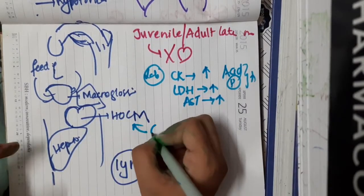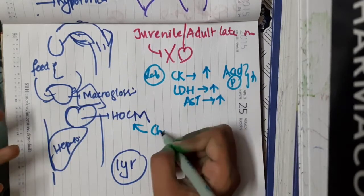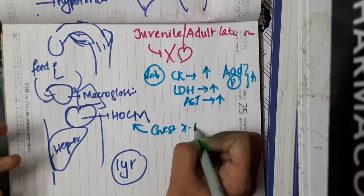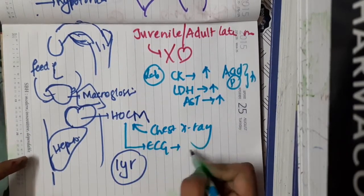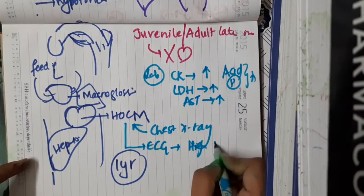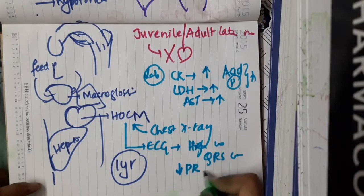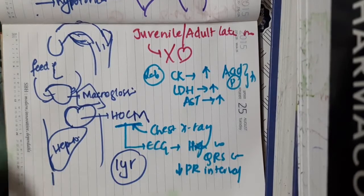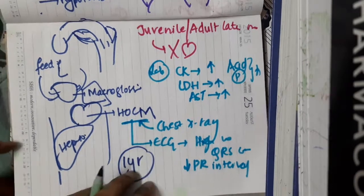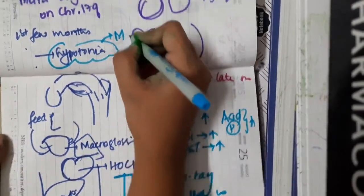Hypertrophic obstructive cardiomegaly — maximum cardiomegaly — can be seen on chest X-ray. Because of this cardiomegaly, if you do an ECG, you will see high voltage QRS complexes and a shortened PR interval due to the hypertrophic obstructive cardiomyopathy. Since the first symptoms appear in the muscles, a muscle biopsy should be performed.